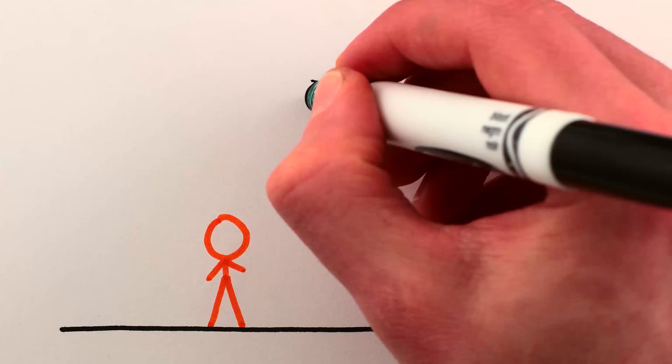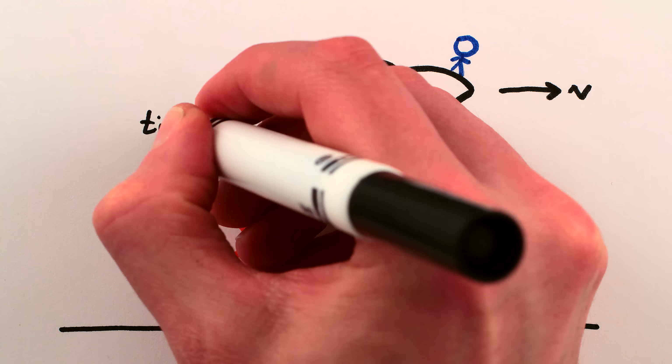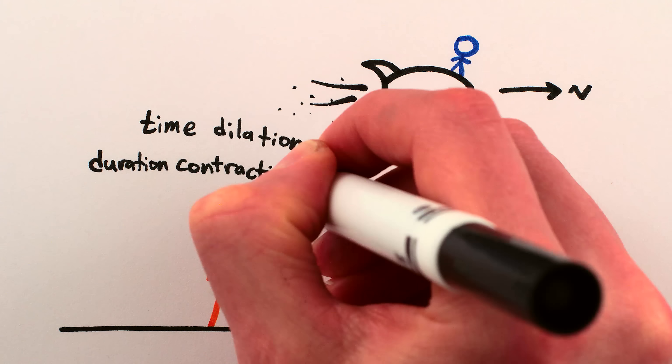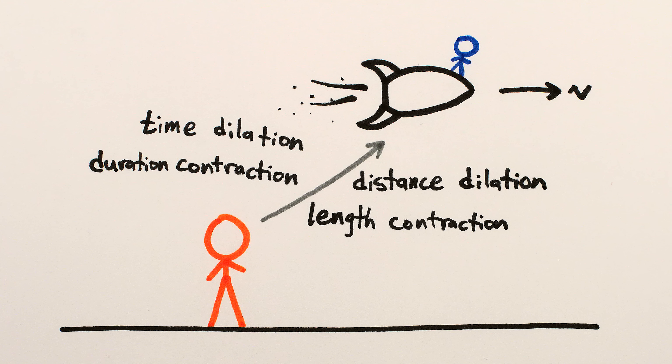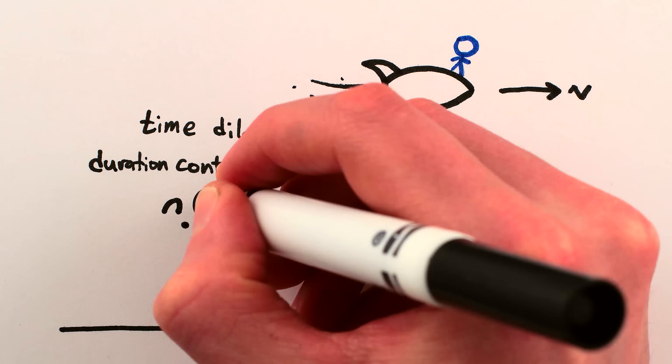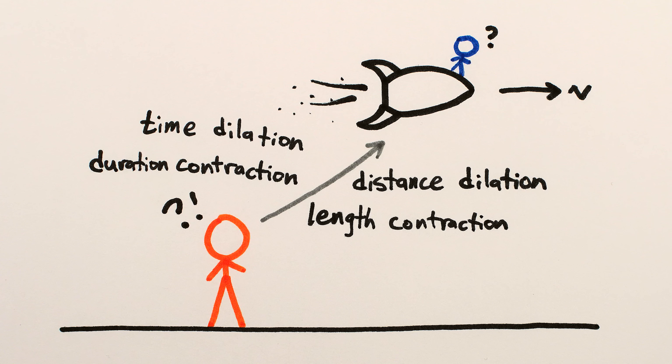Maybe it should be called duration contraction. So to summarize, when changing to a moving perspective in our universe, there's both time dilation and time contraction, and length contraction and distance dilation. These four ideas said aloud as words certainly sound super contradictory and impossible.